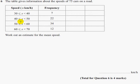Greater or equal to 50 kilometres per hour, but less than 60, there were 34 cars. And there were 12 cars going greater or equal to 60 kilometres per hour, but less than 70. So it says, work out an estimate for the mean speed.